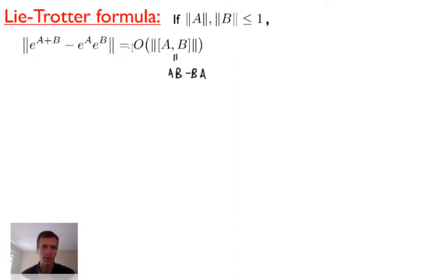The Lie-Trotter formula bounds the difference. The big O notation means there exists some universal constant C independent of the matrices A and B and their dimensions, such that the left-hand side is at most C times the spectral norm of the commutator [A,B]. Since we don't care what the constant C is, we just use big O notation.